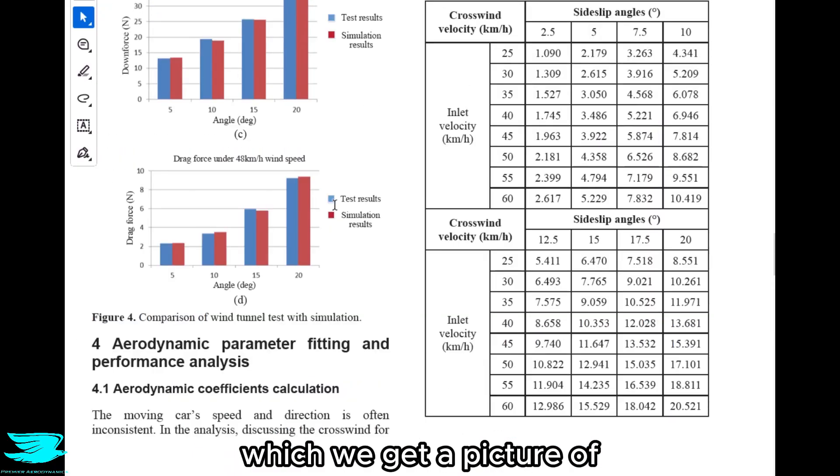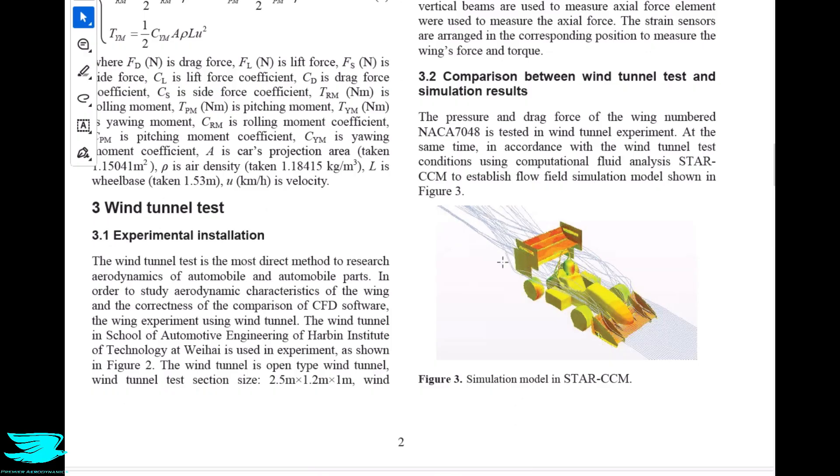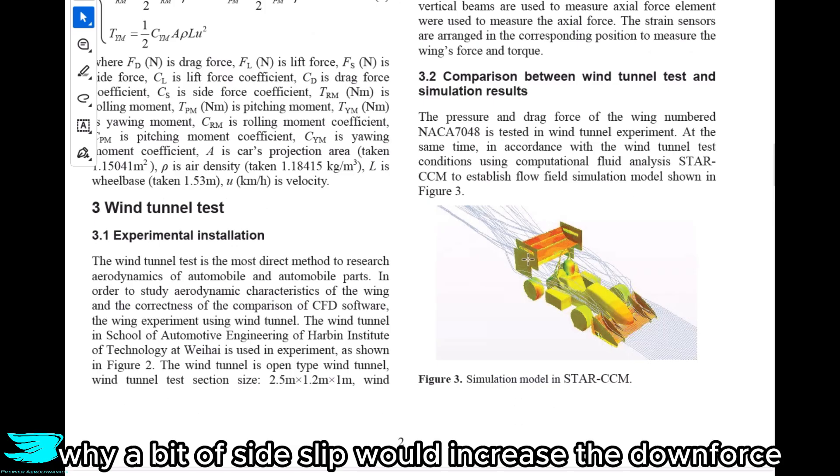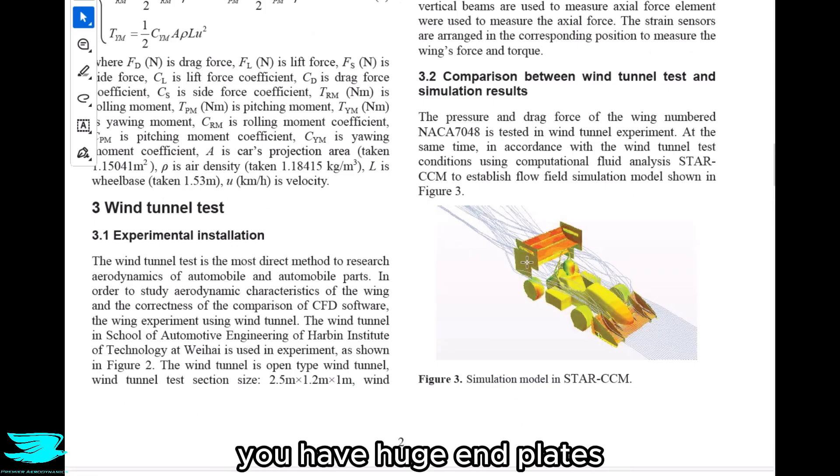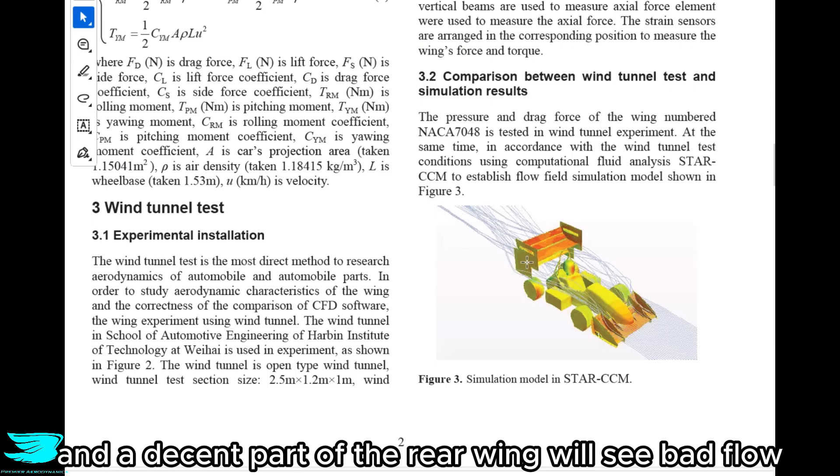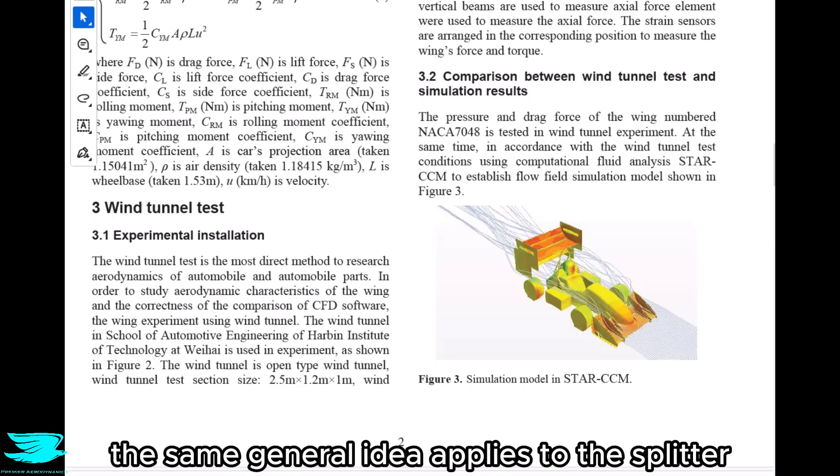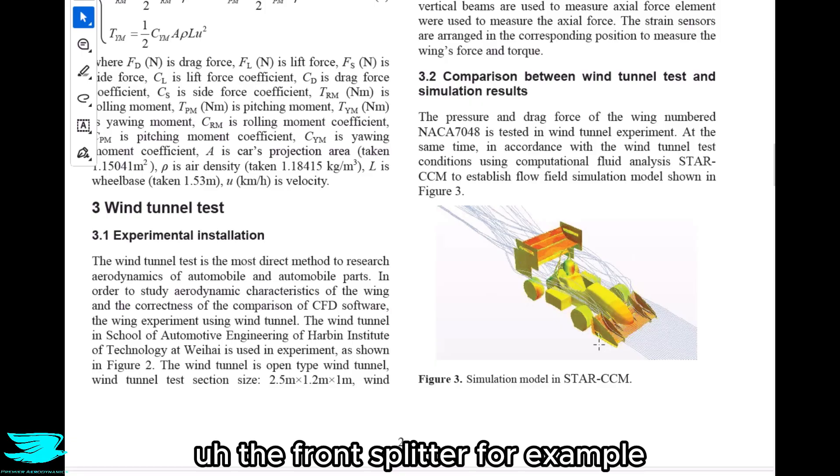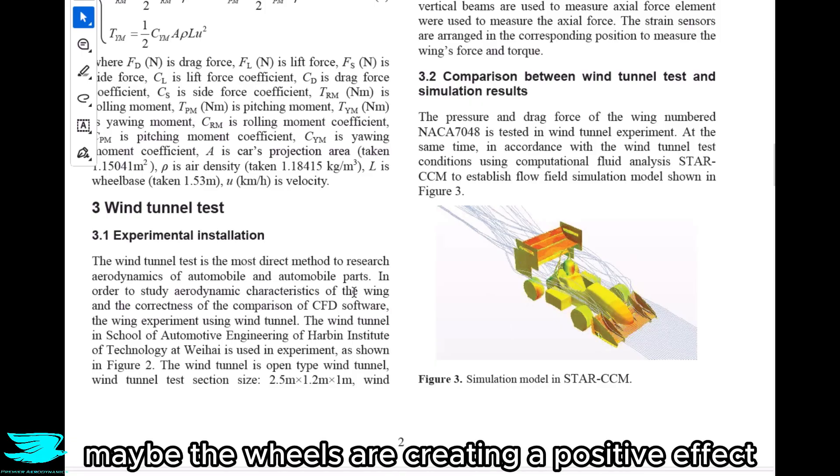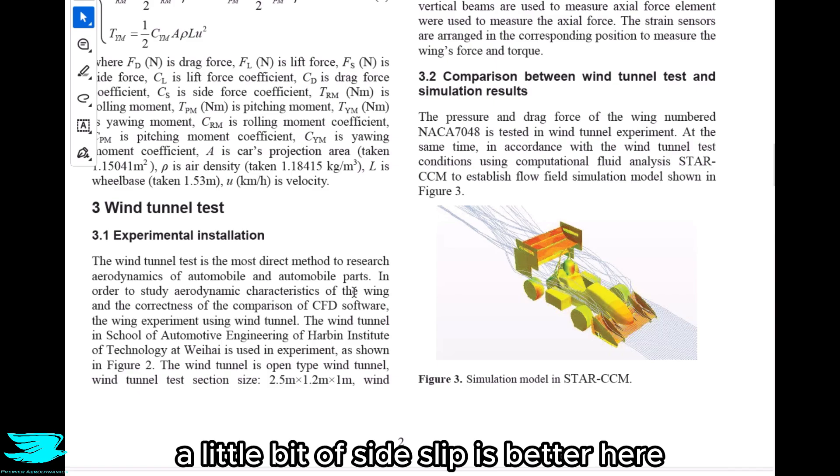I mean, if you were to look at figure 3, which we get a picture of the actual car that they tested, I don't understand why a bit of side-slip would increase the downforce. For example, for the rear wing, you have huge end plates, and if you had flow coming in at an angle to them, the flow will separate around the edge, and a decent part of the rear wing will see bad flow now. So it won't work as well if you just had a straight-on flow. The same general idea applies to the front splitter. Maybe the wheels are creating a positive effect where a little bit of side-slip can increase downforce. I can definitely understand why going to too much greater side-slip angle would reduce the downforce, but I don't understand why a little bit of side-slip is better here.